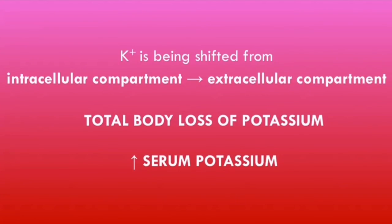To summarize the key potassium abnormalities: potassium is being shifted from the intracellular compartment to the extracellular compartment, and overall there is a total body loss of potassium — which is why potassium replacement is very important in DKA. The serum potassium level will generally increase, but if the patient's kidneys are working well, the serum potassium should be normal. If patients develop an acute kidney injury, the serum potassium level may be very high and they may present with hyperkalemia.